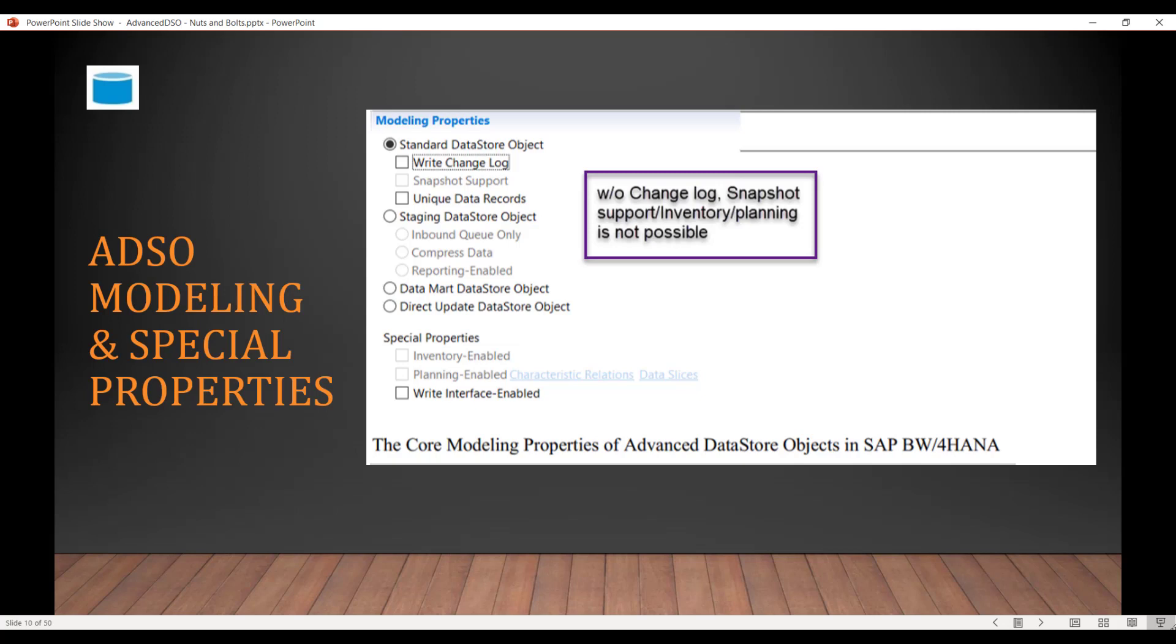Another very important point: Change Log. If you remove that option from the Standard ADSO, you cannot have Inventory, you cannot have Planning, and you cannot have Snapshot Support. So if you want to have these three options, then the Change Log is mandatory for the ADSO to have. So these are the modeling properties and special properties which control the behavior of an ADSO.